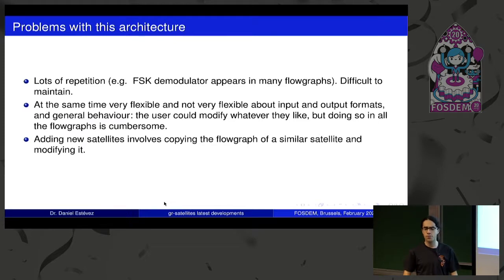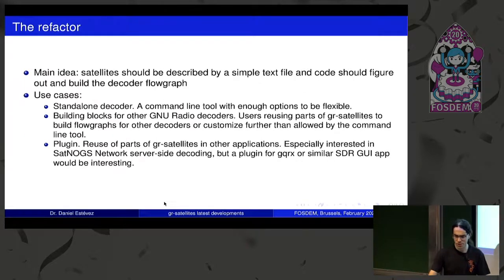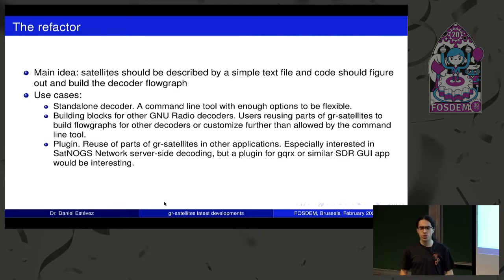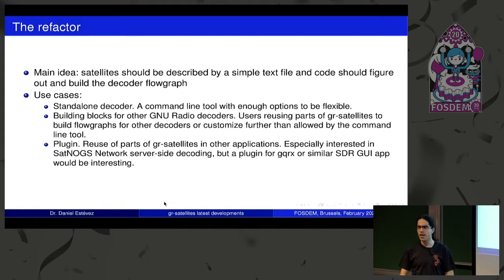The main idea for the refactor is to eliminate all this redundancy. The motivation is: let's see if we can come up with a way to describe what the satellite is transmitting — have a simple text file where you say this satellite is doing this protocol with this error correction and these sorts of things. Then we should have code to read that text description and automatically figure out how to put together the decoder flow graph.